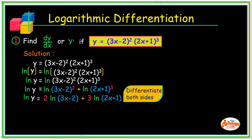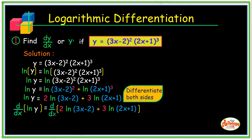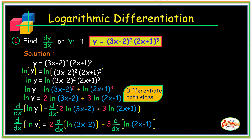After that, we differentiate the equation on both sides. We place d/dx on the left-hand member and the right-hand member. Since 2 and 3 are constants, we place them before the derivative symbol, giving us 2·d/dx[ln(3x - 2)] plus 3·d/dx[ln(2x + 1)].